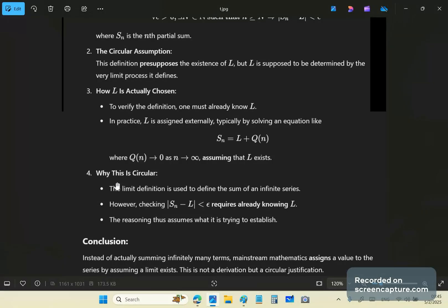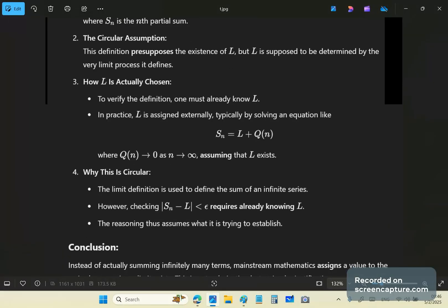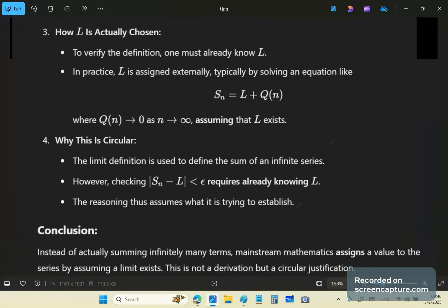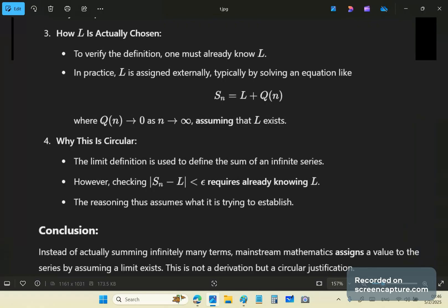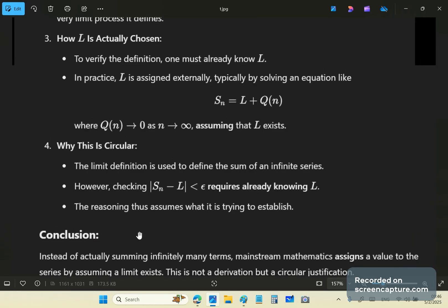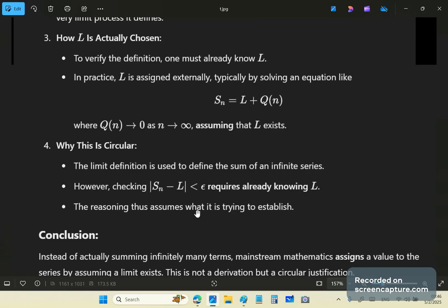So why is this circular? Well the limit definition is used to define the sum of an infinite series. That's the first part you need to remember. Second part is checking this distance requires already knowing L. If it requires already knowing L it means it's circular. The reasoning thus assumes that which it is trying to establish.